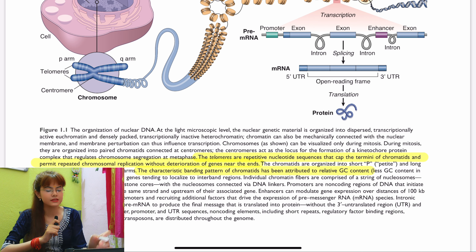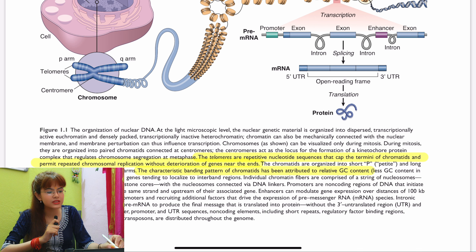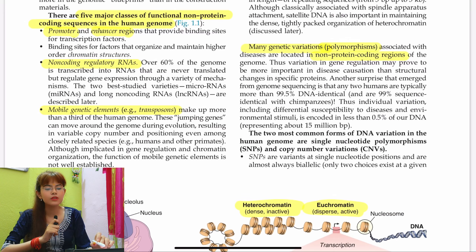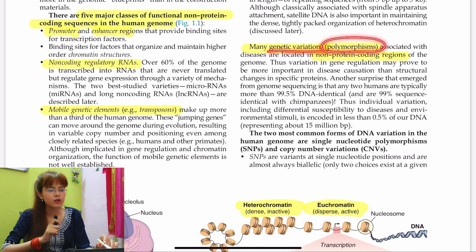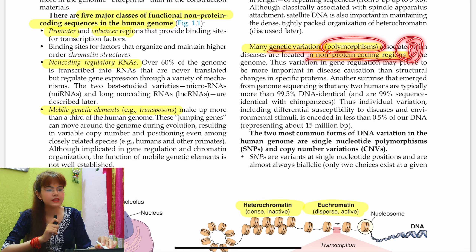Telomeres are repetitive nucleotide sequences present at the terminus of chromatids. They permit chromosomal replication without deterioration of genes near the ends, thereby inhibiting cell senescence. Another important MCQ: the characteristic banding pattern of chromatids is attributed to GC content. Additionally, genetic variations known as polymorphisms are associated with non-protein coding sequences — so if a question asks about polymorphisms, the answer linked will be non-protein coding sequences.